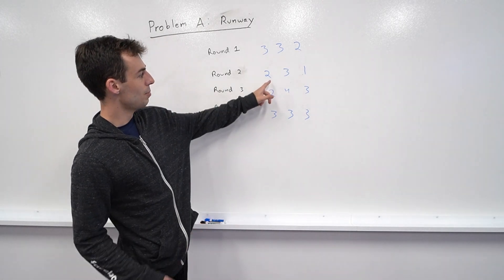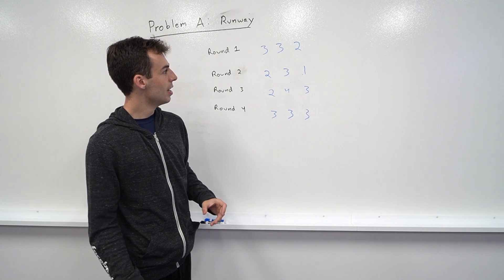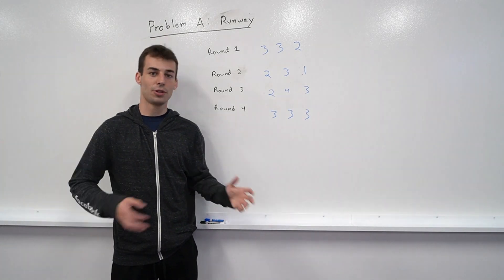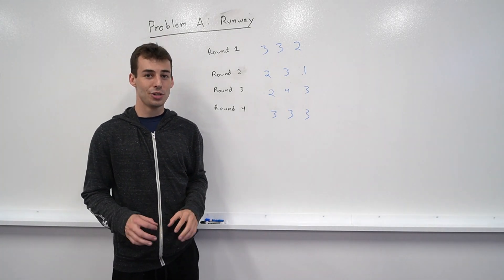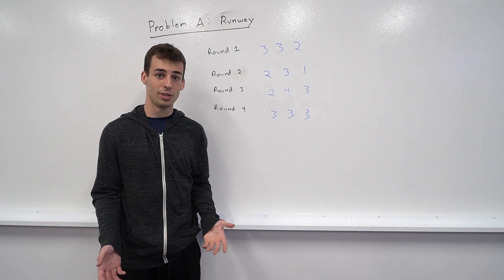In round two maybe you have outfits two, three, and one and so on. Now since you only have n models, your models are going to have to change clothes and you want to minimize the number of times the models change clothes in total.